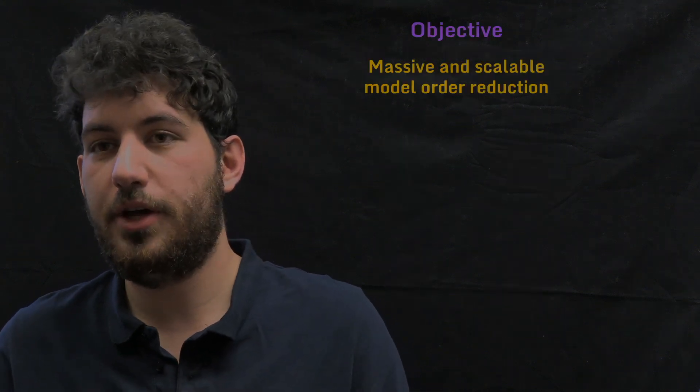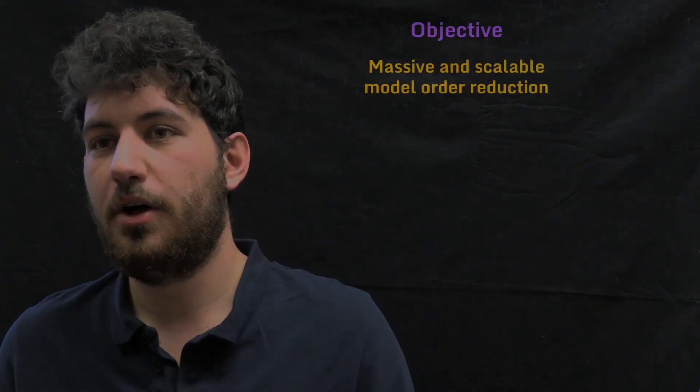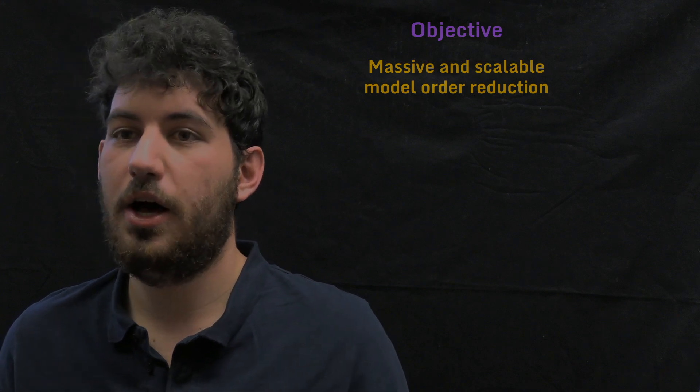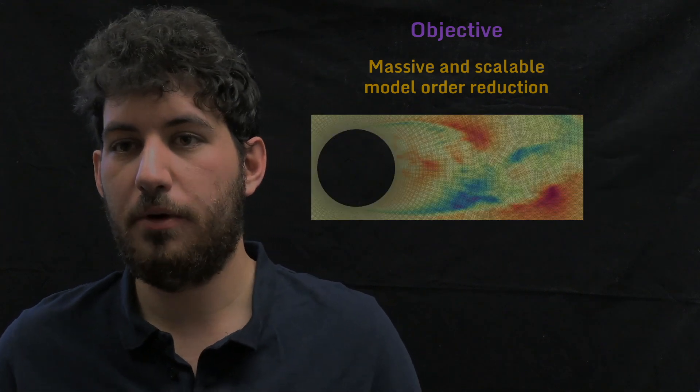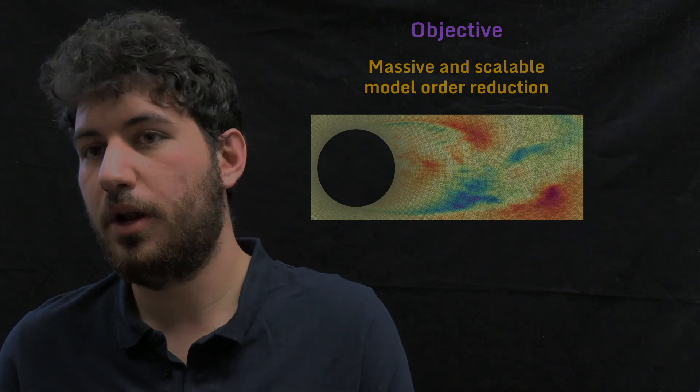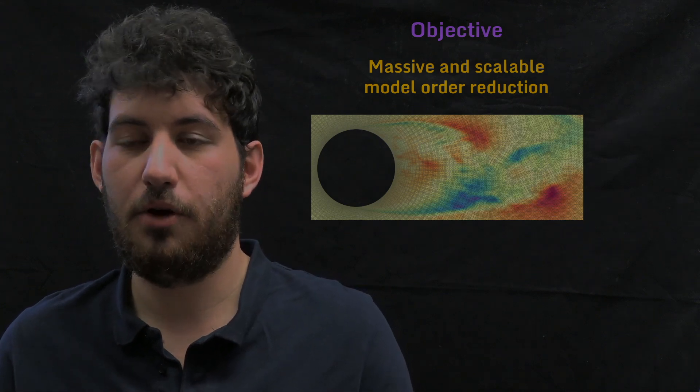The objective here is having a massive and scalable model order reduction technique that can help us find reduced order models of turbulent fluid flows. In this video I will focus on finding a reduced order model for the flow over a cylinder.